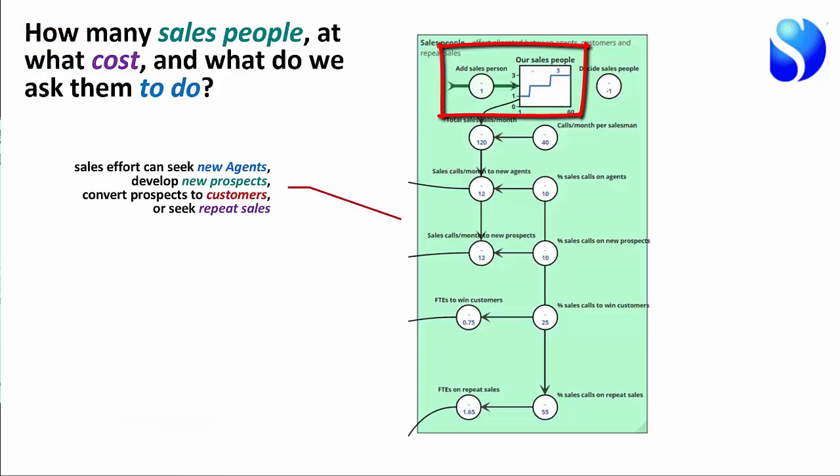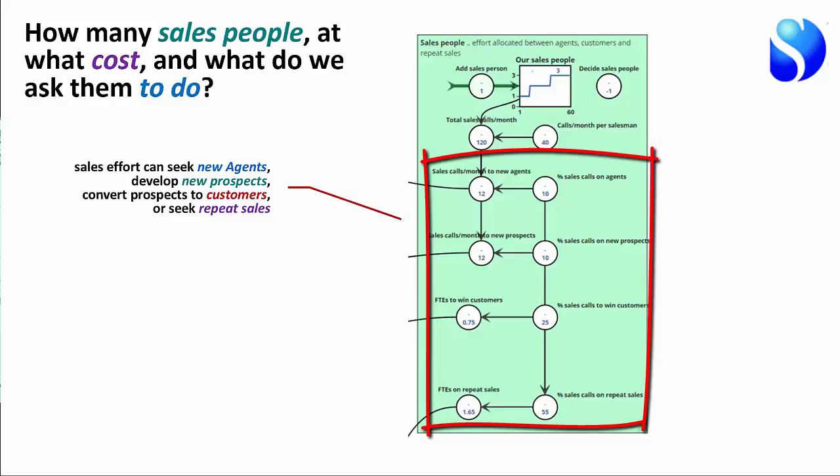This is kind of important. This is the number of salespeople we employ, and this is an allocation procedure. We decide we have three people who can make 120 calls per month. Where do those calls go? Do they go to new customers we've never spoken to before? Do they go to prospects to get them to sign the first contract? Do they go to existing customers to try to persuade them to give us more sales? Or do we go to competitors' customers and try to get them to convert? So there are a number of different things our salespeople can do, and we allocate those people to those tasks.